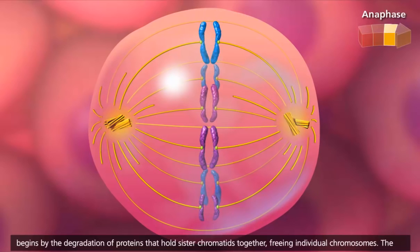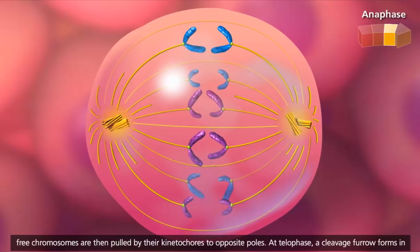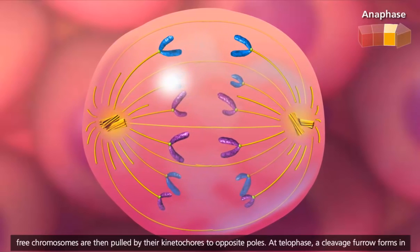Anaphase begins with the degradation of proteins that hold sister chromatids together, freeing individual chromosomes. The free chromosomes are then pulled by their kinetochores to opposite poles.